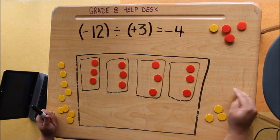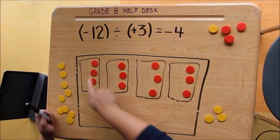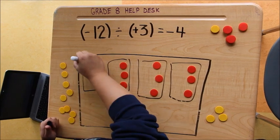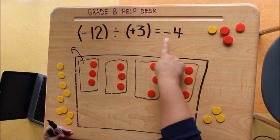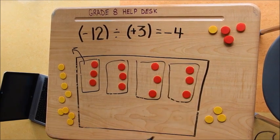And I'm left with 12 negative tiles in the bank. Because I took out tiles, that tells us that our quotient is negative, and I took out 4 groups. So we have negative 4 as our quotient.